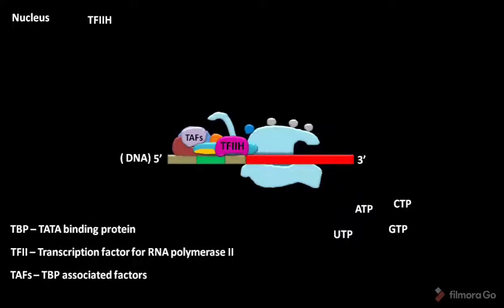TFIIH has nine subunits. One of the subunits acts as DNA helicase. Due to the DNA helicase activity, the subunit helps to unwind the DNA double helix by hydrolyzing ATP.